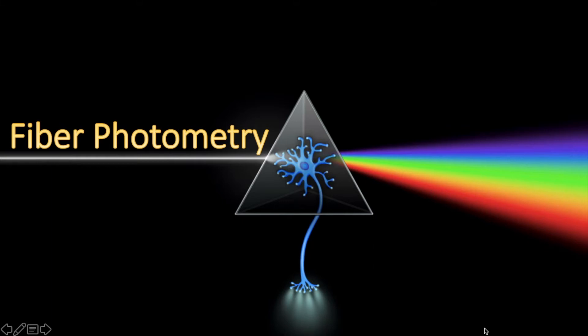Hello everyone. Today I'm going to be talking to you about a cutting-edge technique used in modern neuroscience for measuring neural activity. This technique is called fiber photometry and has begun to provide insights into the functions of specific brain circuits.